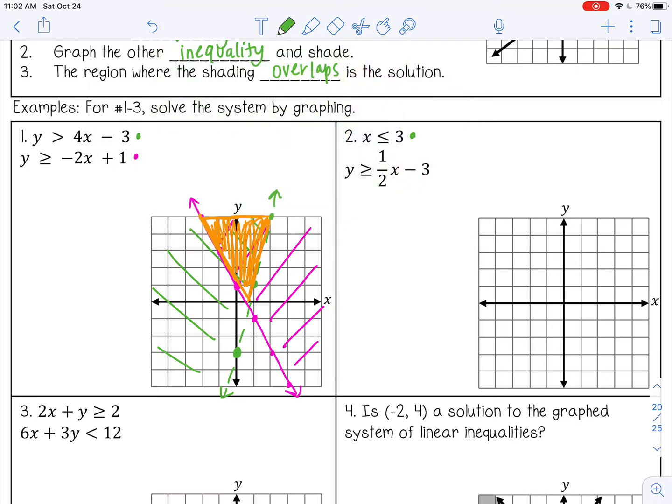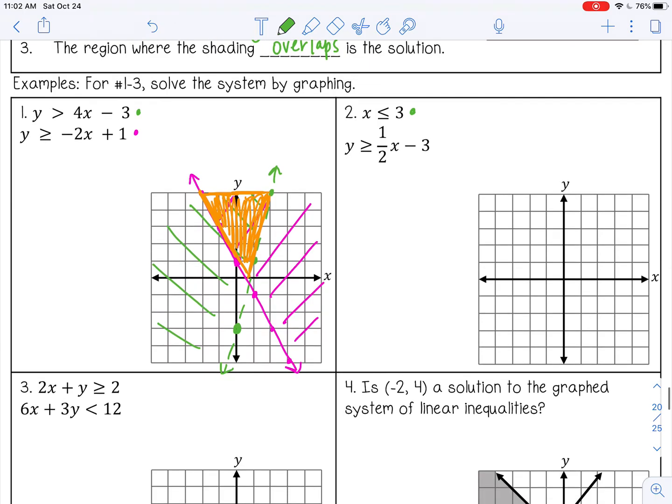So x is less than or equal to 3. Remember if it's x equals a number, remember HOY and VUX. So this is x equals a number, it's a vertical line going through 3. And this is an inequality, so we're going to shade less than that. Less than or equal to, that's why it's a solid line.